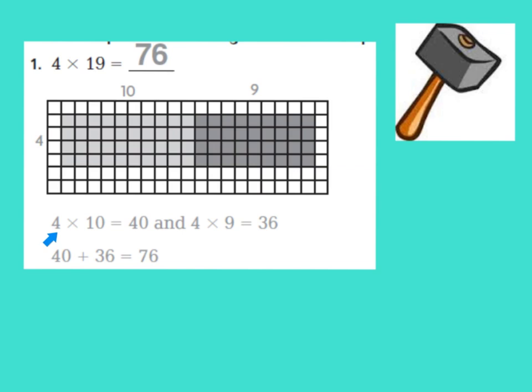And over here we have 4 down and 9 across. So they multiplied 4 times 10, and that makes 40, 4 times 9, and that makes 36.